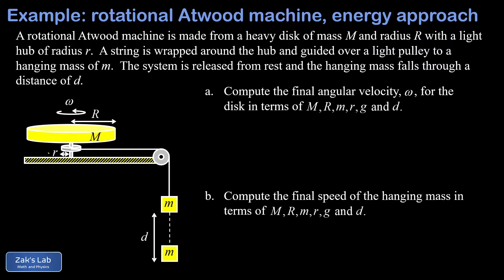What we're trying to find in the problem is the final angular velocity of that heavy disk and also the final speed of that hanging mass little m that's falling downward.